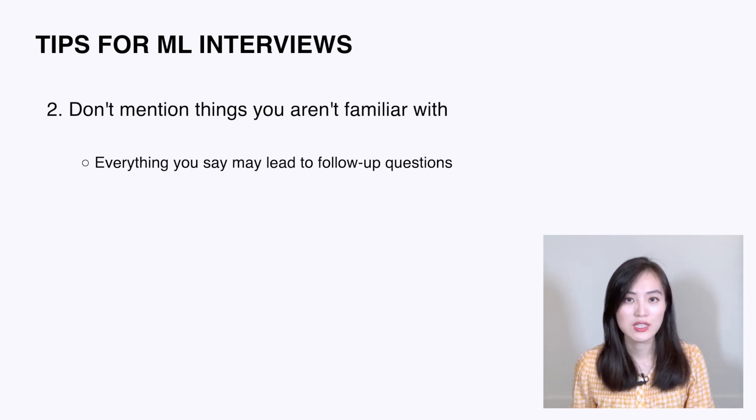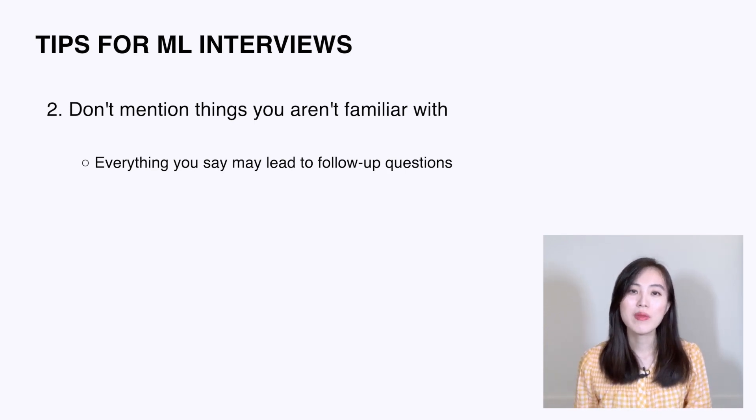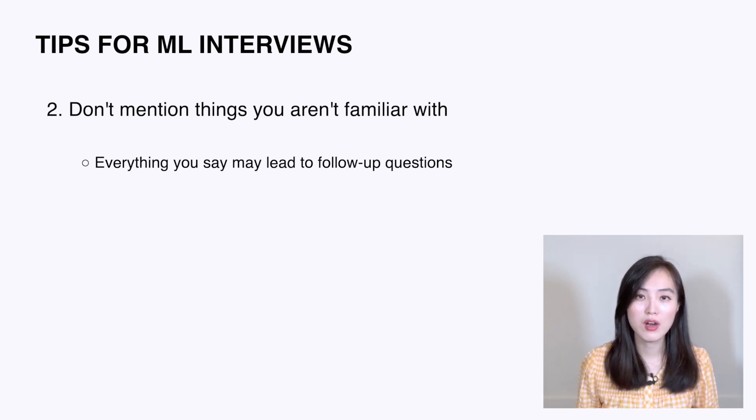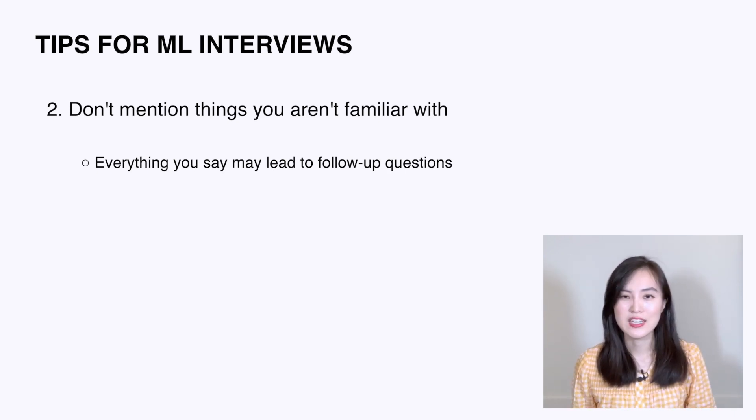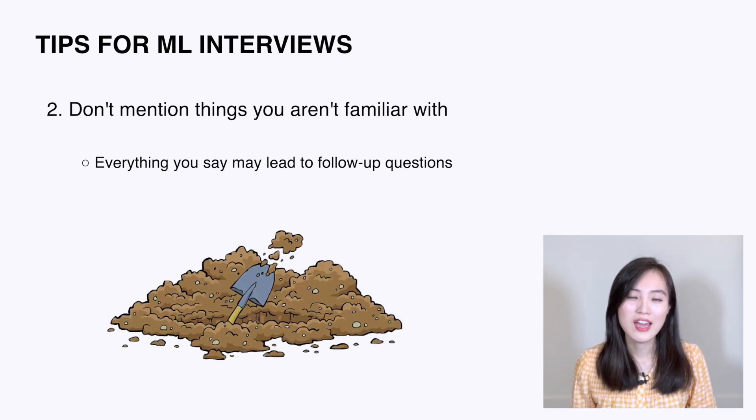The second tip is to not mention anything you're not familiar with, because everything you say can lead to a follow-up question. You may want to impress the interviewer with advanced terms like convolutional neural networks, but you might dig yourself into a hole if you can't explain it clearly. Those are the four kinds of machine learning problems in data science interviews — let me know in the comments if you have questions or topics you'd like to see. See you in the next video!